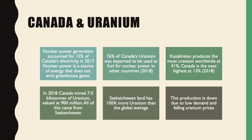Some quick facts on Canada and uranium: in 2018, Canada mined 7 kilotons of uranium, valued at $900 million — down from peak levels around 2014 to 2018, but still a solid amount. All of that uranium came from Saskatchewan, which has three uranium mines, two of which have since closed. Canada is also the second biggest producer and exporter of uranium in the world.